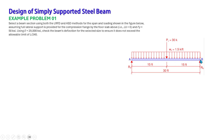We have a simply supported beam uniformly loaded with 1.5 kips per foot dead load and a concentrated live load of 30 kips, over a 30-foot span.